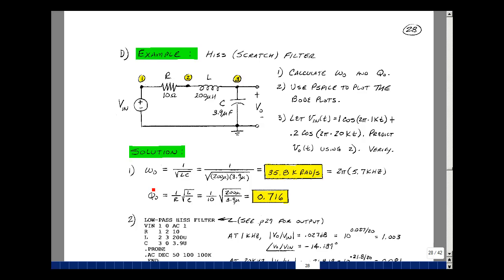From our calculations in two-page earlier, omega naught was equal to 1 over the square root of LC. So given the value of L and C, that turns out to be 35.8 kiloradians per second. If you factor out a 2 pi, that's 5.7 kilohertz. So we're in the audio band. The value of q naught was 1 over R, square root of L over C. And for the values of R, L, and C, that turns out to be 0.716.